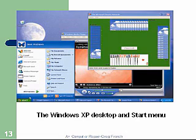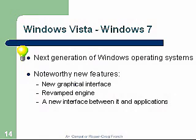Windows Vista and Windows 7. Vista is something we're bypassing — it has seemed fairly sluggish, was incompatible with a lot of applications and hardware, and required all new drivers. Windows 7 has just come out and we're anxious to see how it performs — it seems a little bit better and faster. The only problem will be coming up with drivers for all the different hardware and software. Usually takes Microsoft about a year or two to get all the bugs worked out. So Windows 7 is something we'll probably hold off on; XP will remain our primary operating system for the next year or two. Noteworthy new features of Vista/7 include a new graphic interface, a revamped engine, and a new interface between it and the applications.